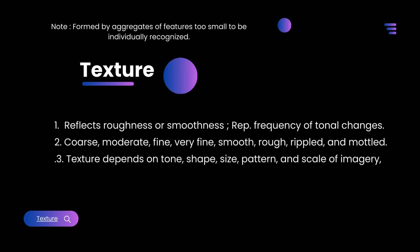Texture reflects roughness or smoothness and is a representative frequency of tonal changes. Texture types include coarse, moderate, fine, very fine, smooth, rough, rippled, and mottled. Texture depends on tone, shape, size, pattern, and scale of imagery. Note: texture is formed by aggregates of features too small to be individually recognized.